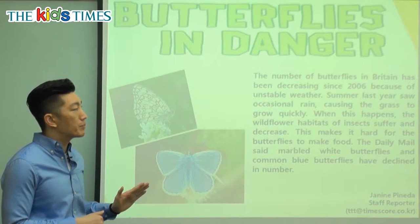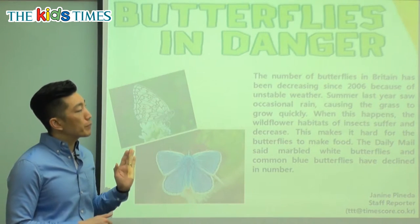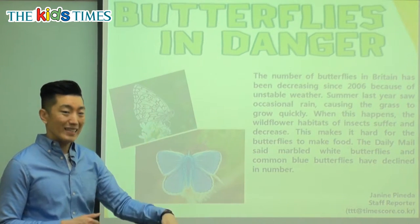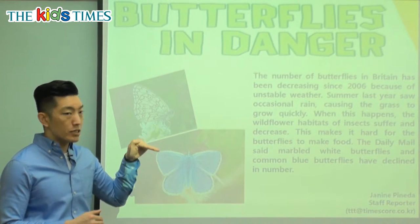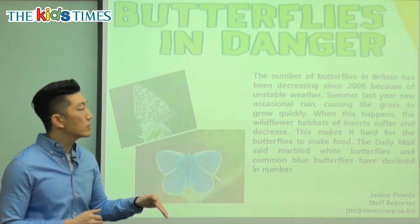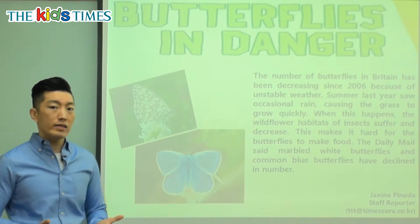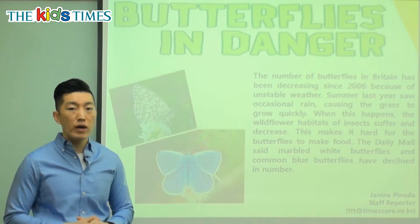Decreasing is the opposite of increasing, so it means it's going down. The number of butterflies has been going down since 2006. Why is that? It's because of unstable weather.